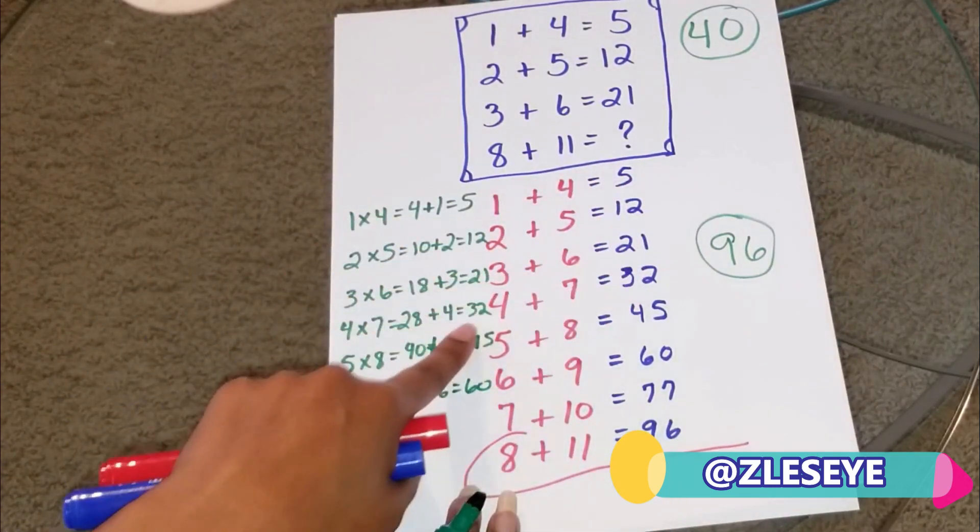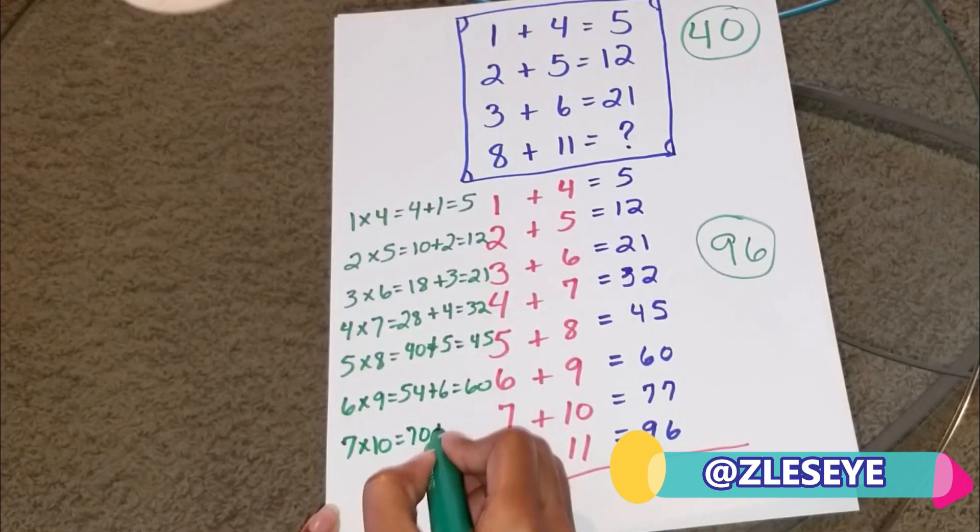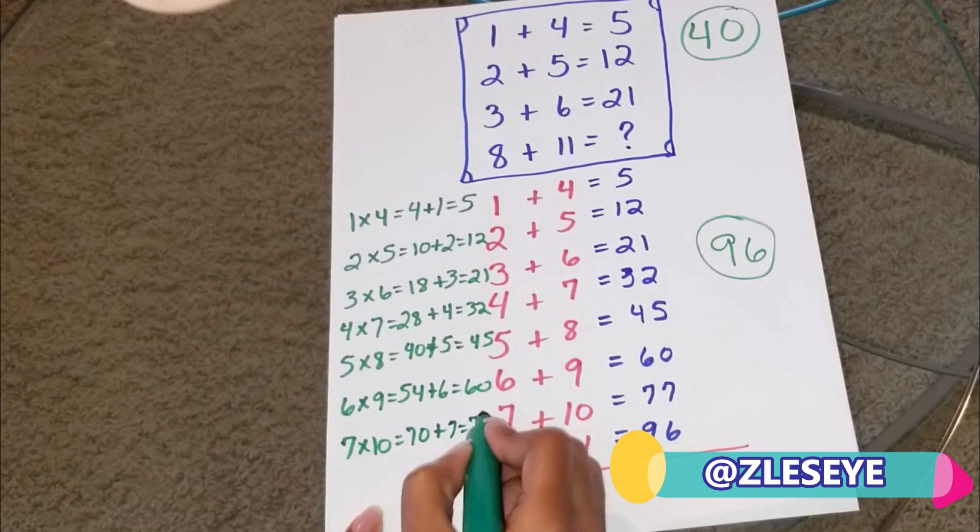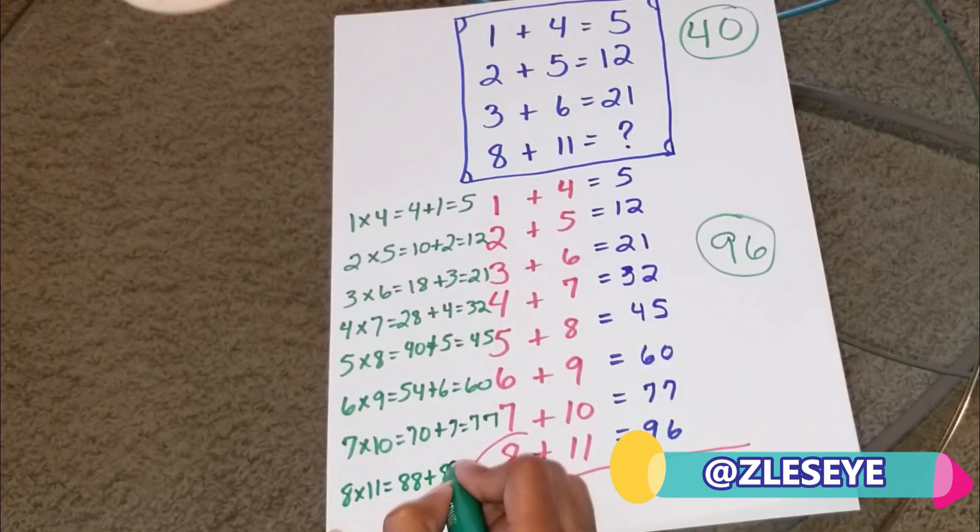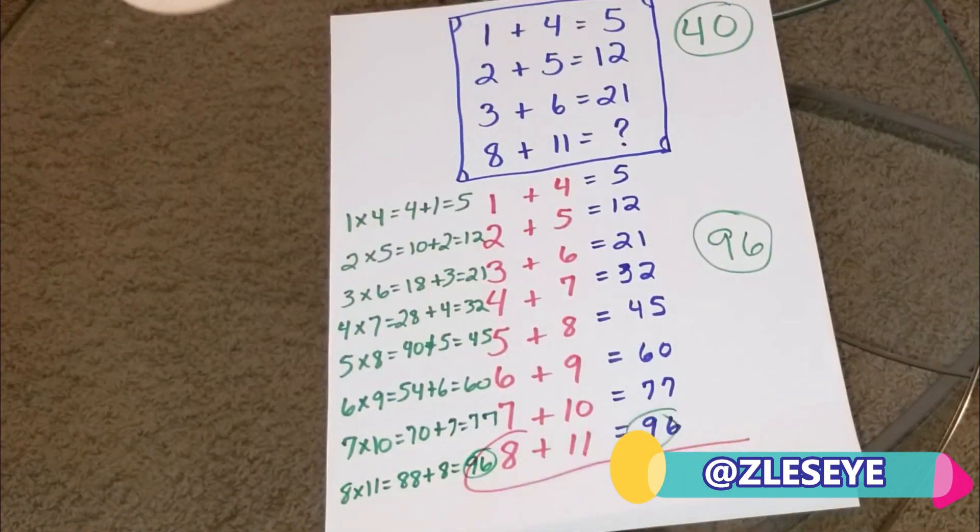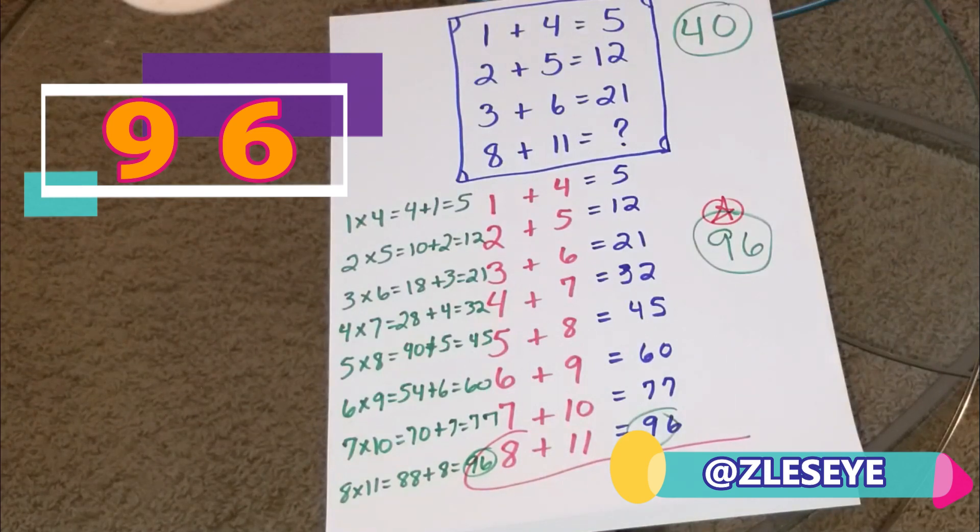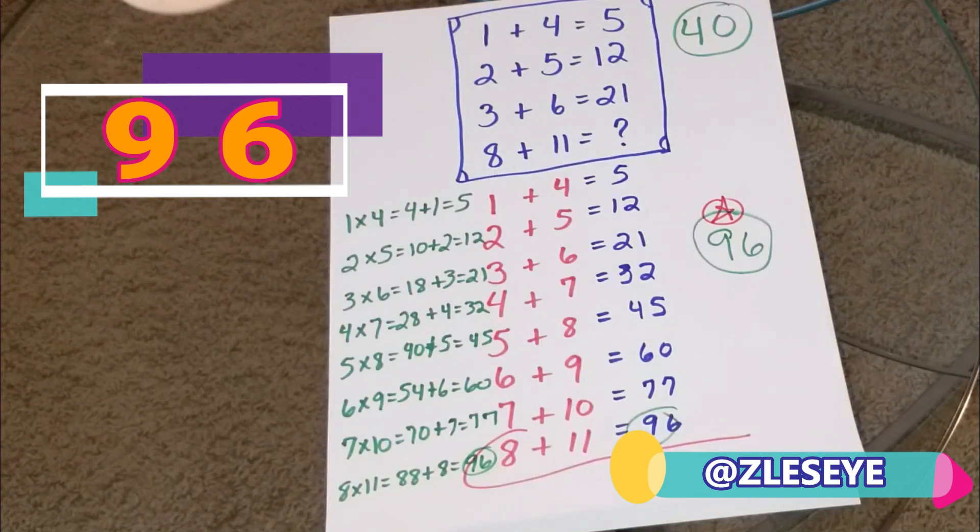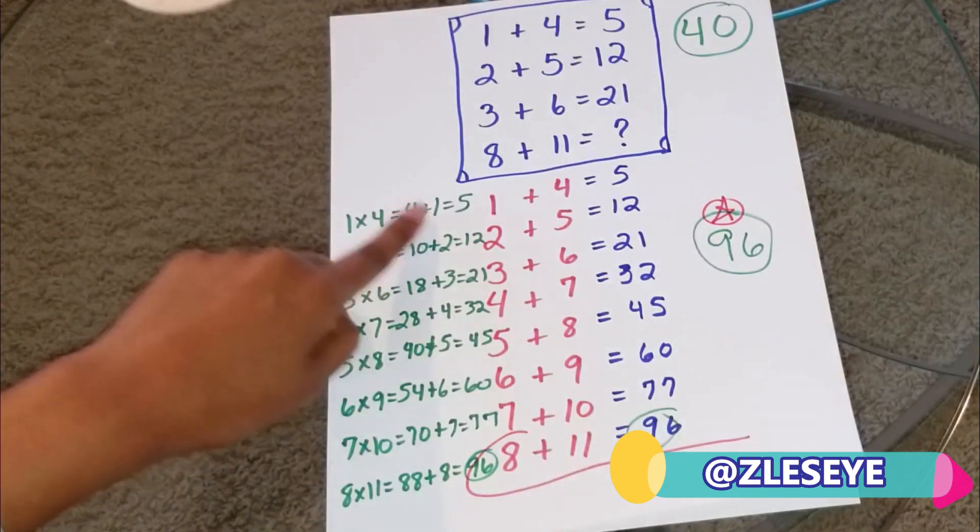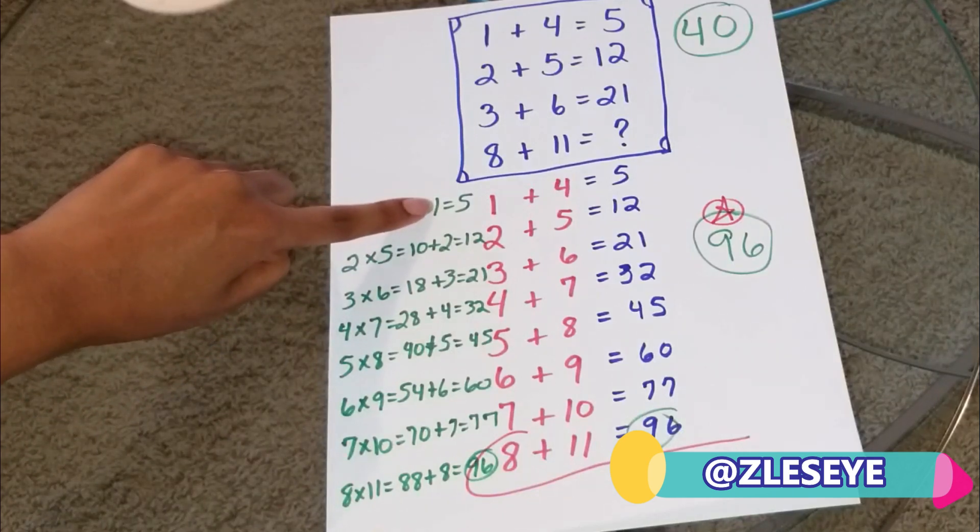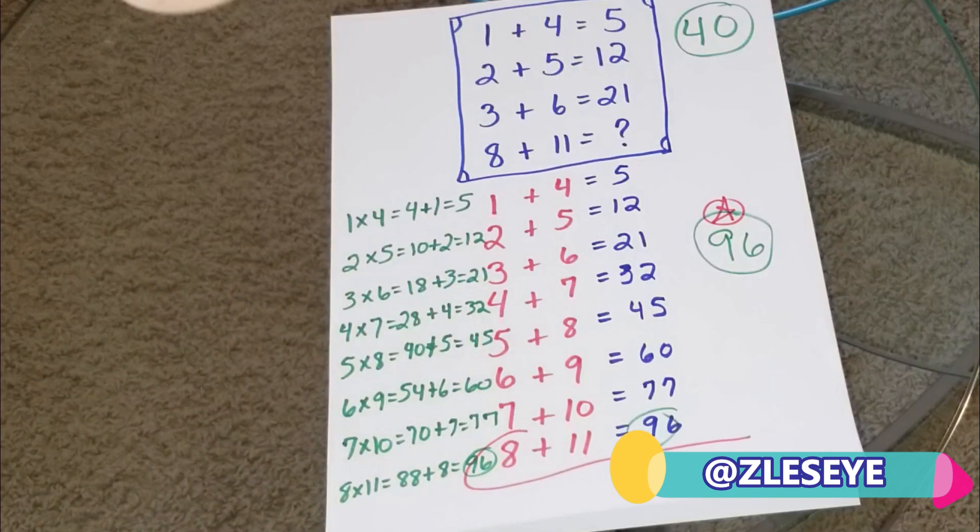Same answers. 7 times 10 equals 70 plus 7 equals 77, right? 8 times 11 equals 88 plus 8 equals 96. 96, our answer, guys, is 96 because you cannot break a mathematical pattern. It goes against the untold or unknown mathematical rules. And I want to show you another way to look at it. 1 times 4 equals 4 plus whatever the first number is. 2 times 5 equals 10 plus whatever the first number is. That's my 2. You see? And we've established that pattern. So this is why the answer is 96.